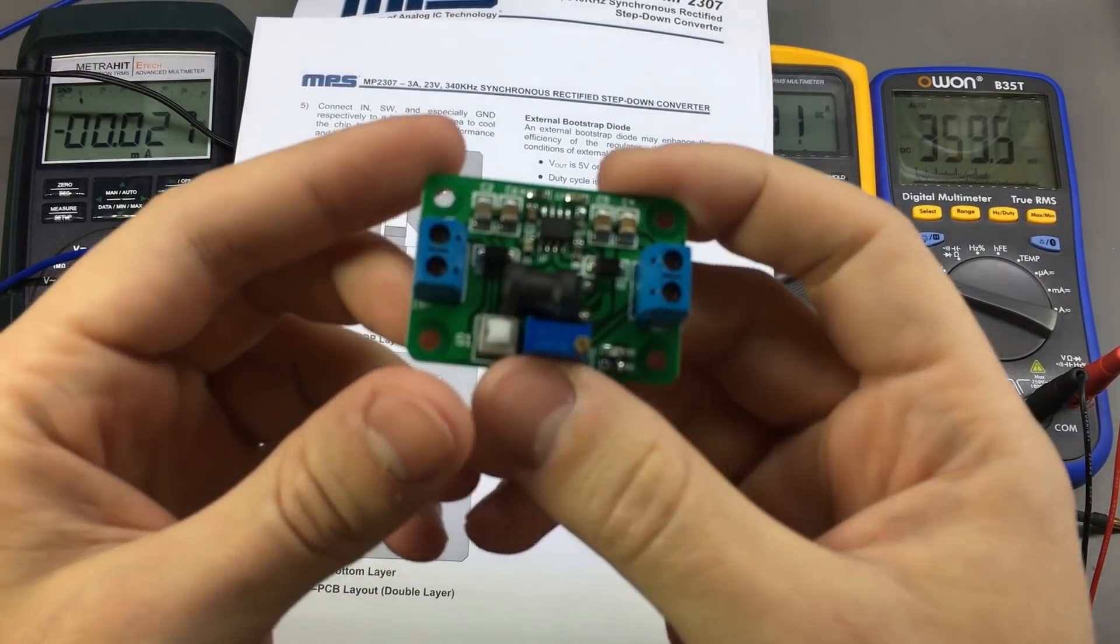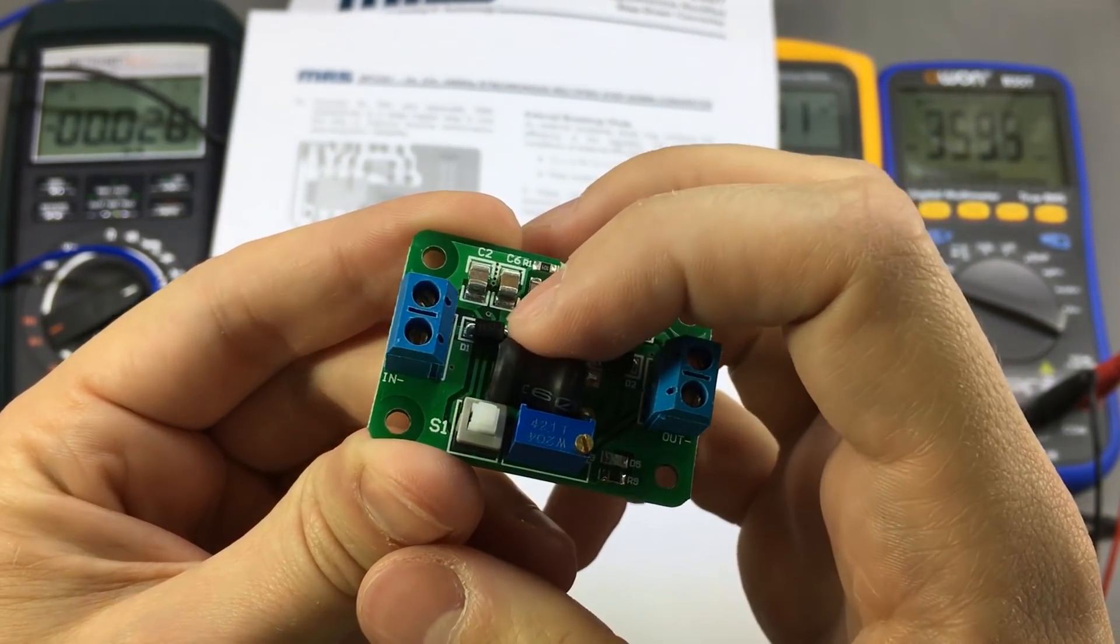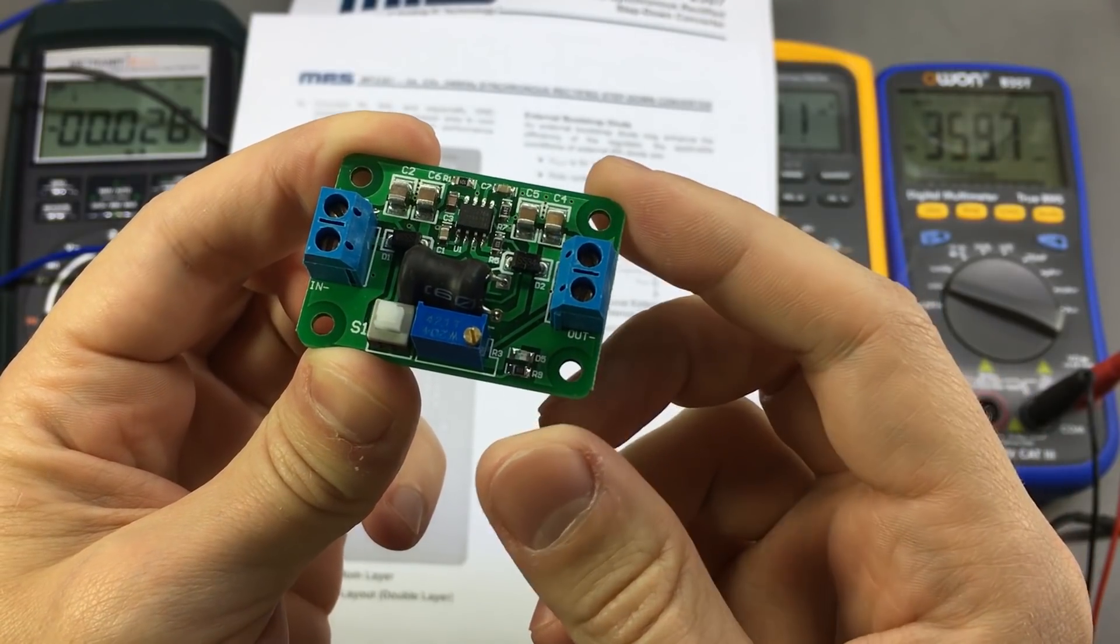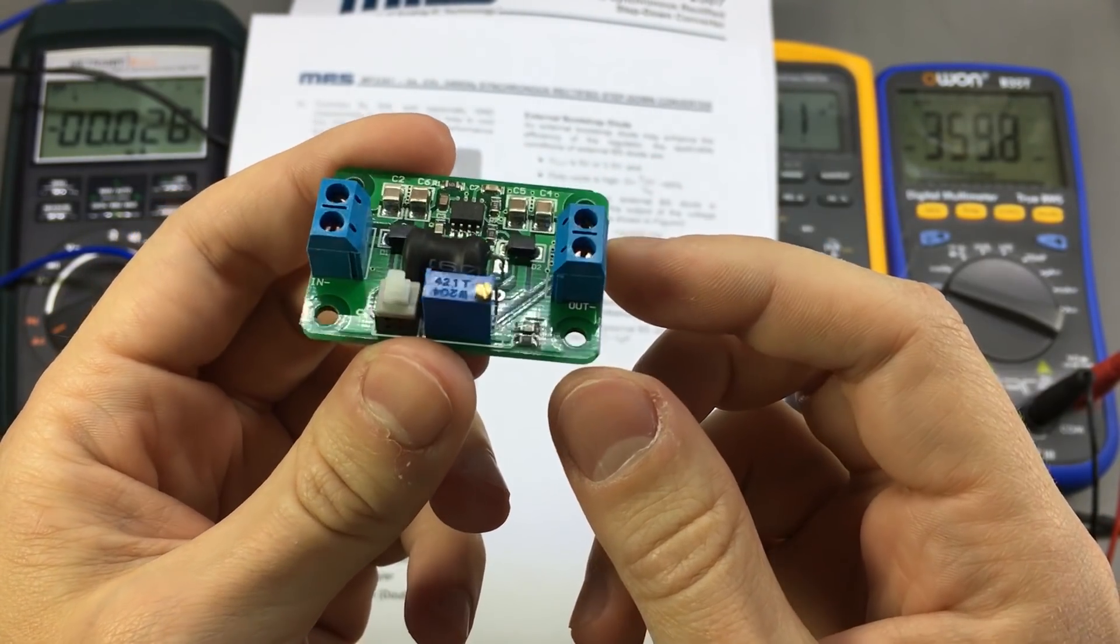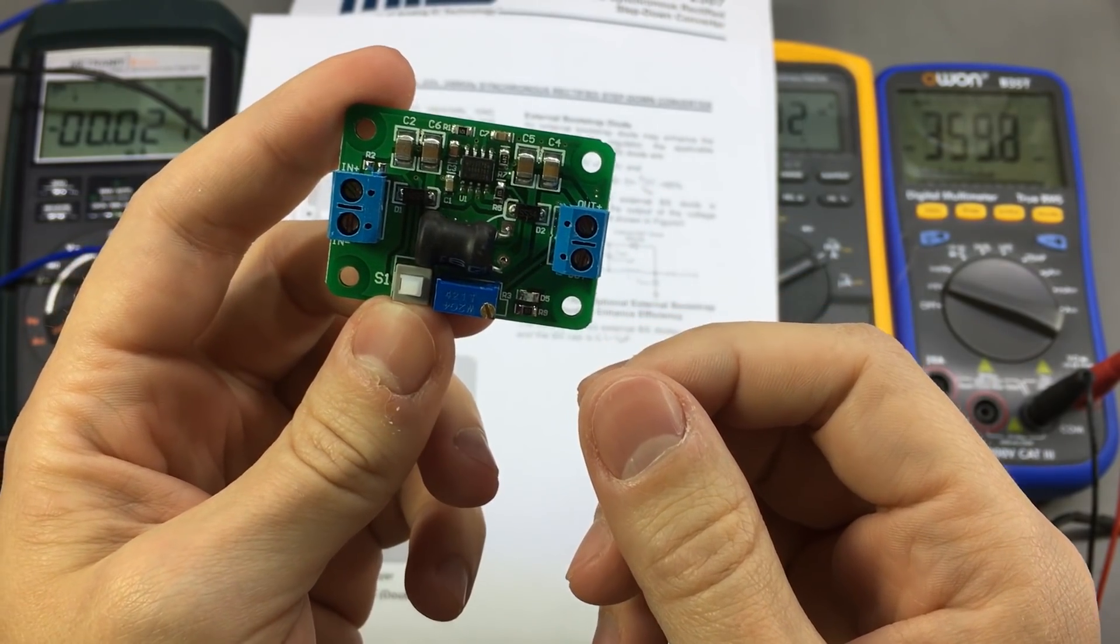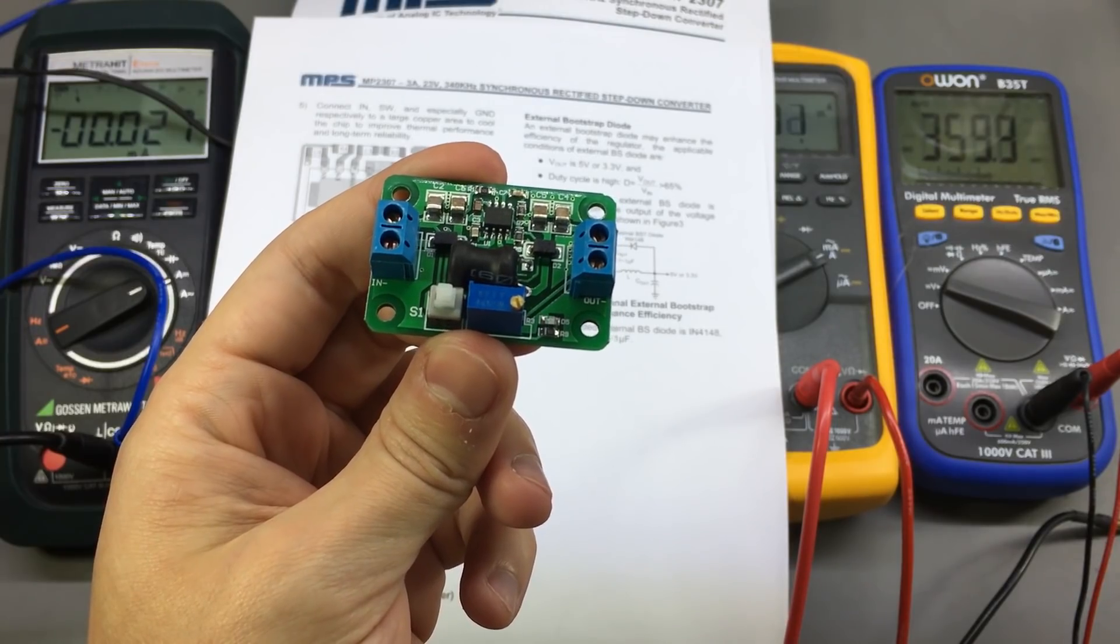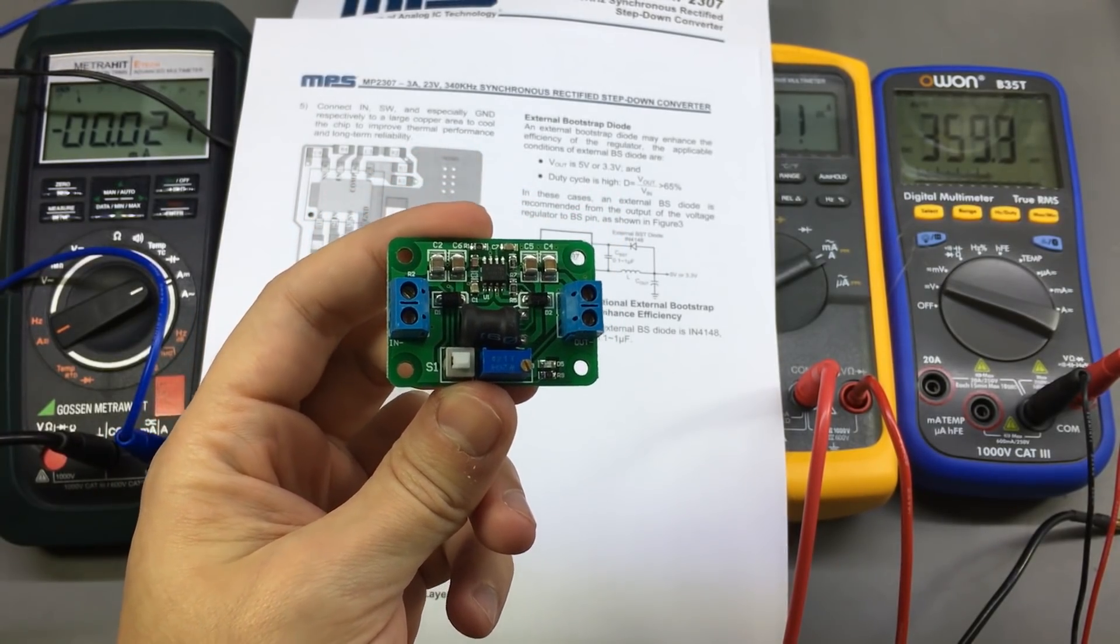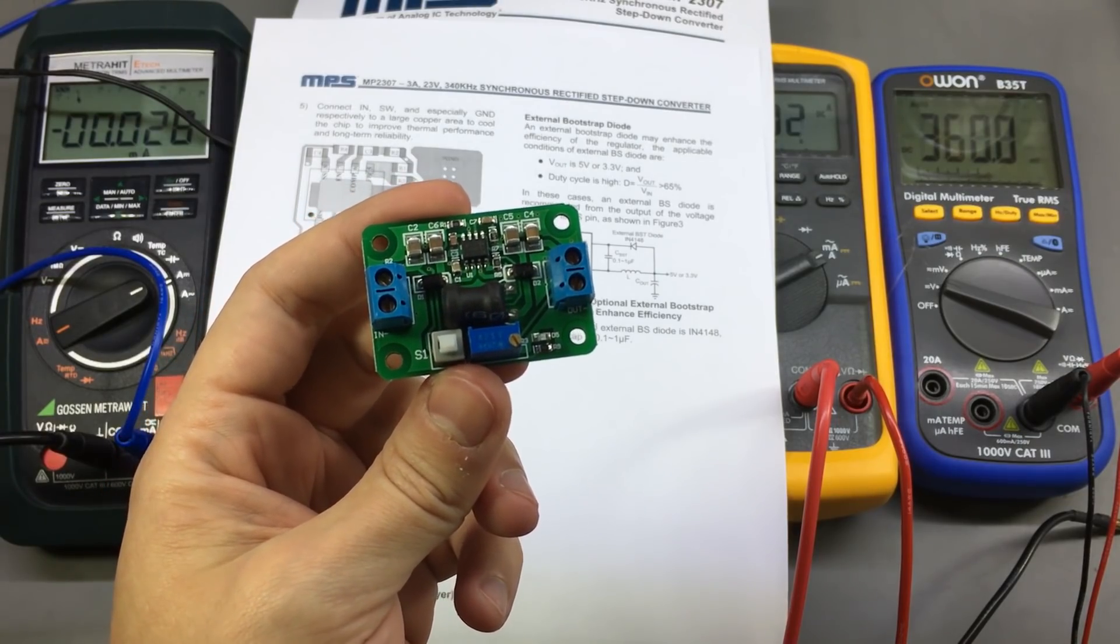Also, another thing that I noticed is that we have an input diode, which is this one right here, D1. They are probably using this diode as an input polarity protection, but that has a side effect. It lowers the efficiency because you will always drop a voltage on that diode. So when you want maximum efficiency, you don't use a series diode on the input.